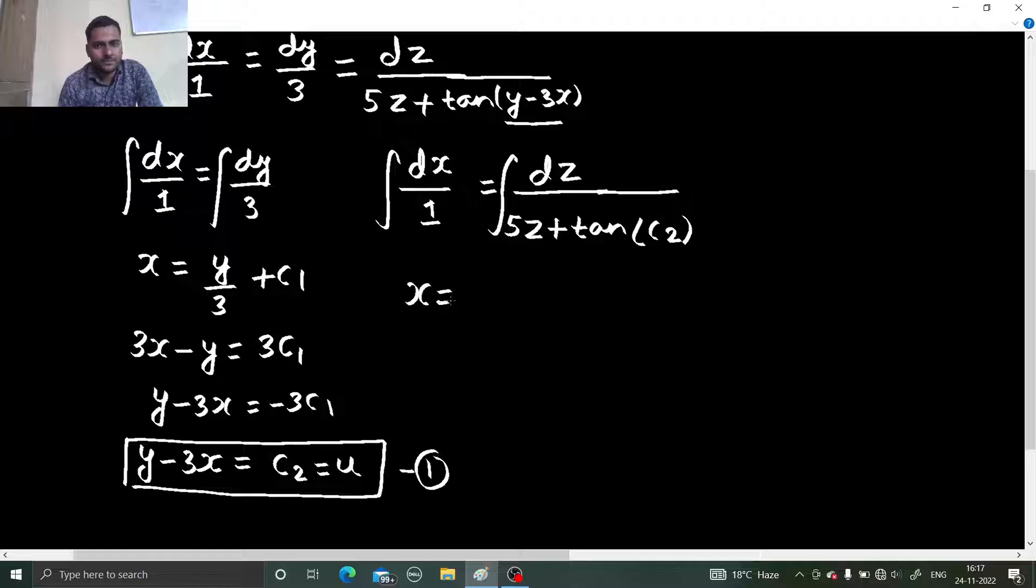So there you get x from this side. Here, 1 upon linear. So 1 upon linear is log 5z plus tan c2 divided by coefficient of z because you are doing with respect to z. So coefficient of z should be there. Simply differentiate this denominator.